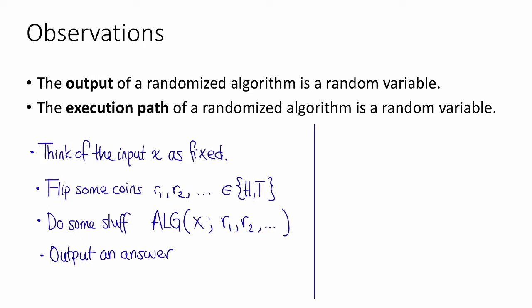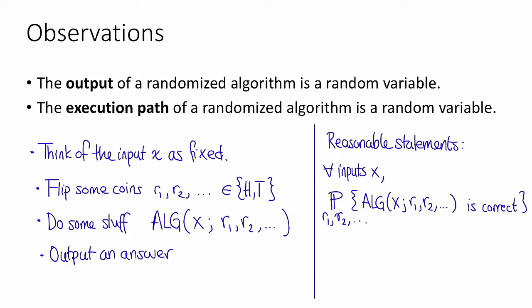What these observations mean is that the following statements are reasonable statements to make, meaning that they parse and they make mathematical sense. The first is that for all inputs x, the probability that the algorithm is correct on x, that is the probability over r1, r2, dot dot dot, that alg of x, r1, r2, dot dot dot is correct, is greater than or equal to something. This is a reasonable statement that we could make, and in many cases perhaps it is a desirable statement for us to make.